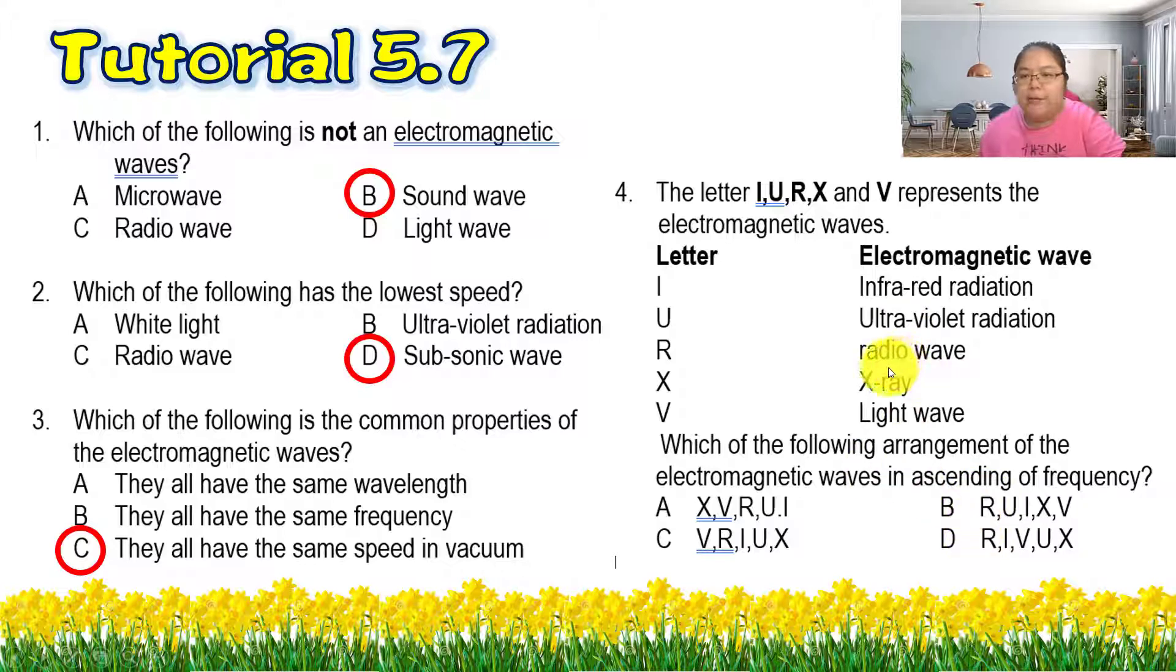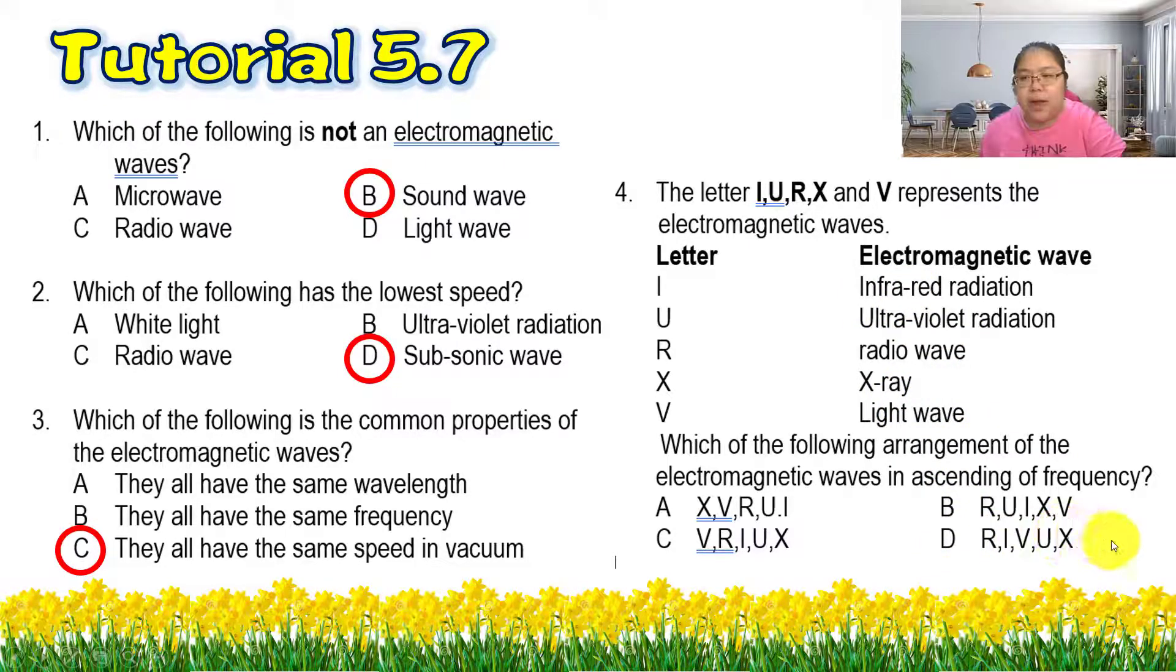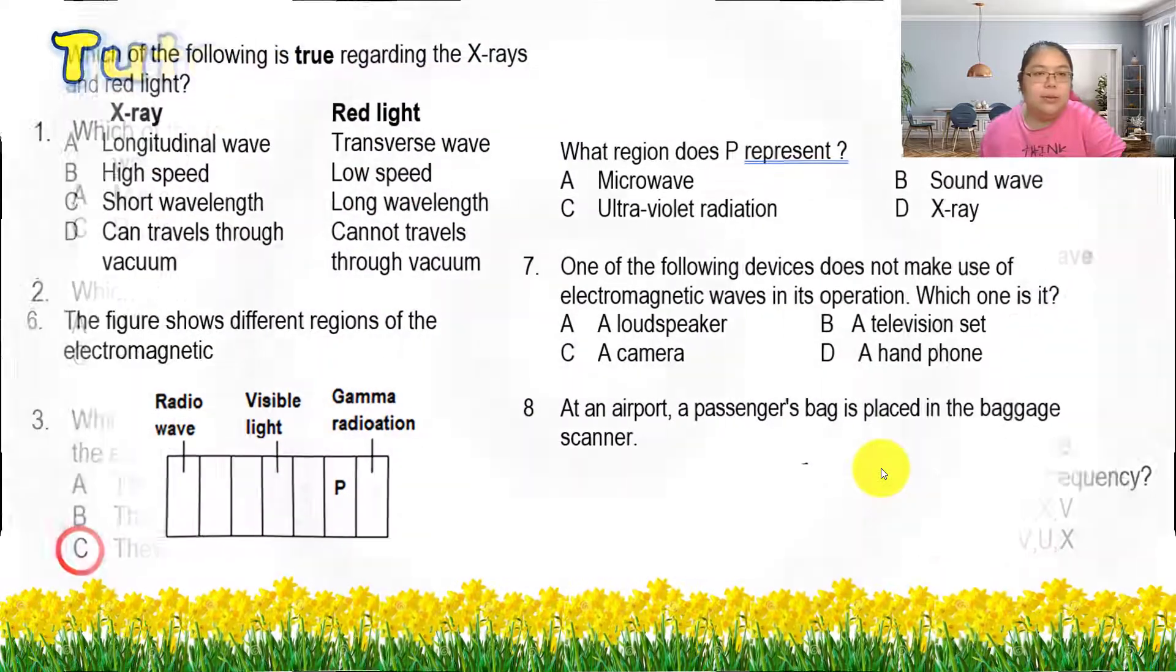We check again. After the radio must be microwave, but microwave is not here, so that's infrared. Then should be R, I, V, U, X. V is visible, after that U is ultraviolet, then X is X-ray, so the answer should be D.